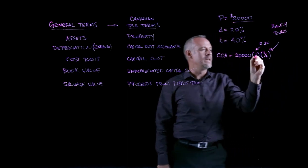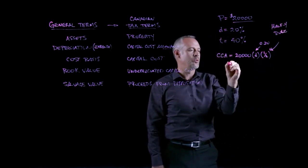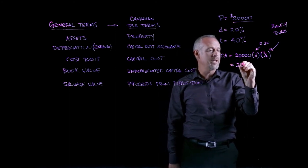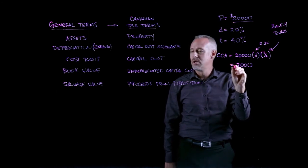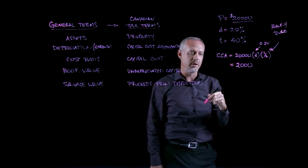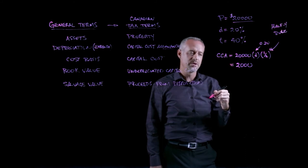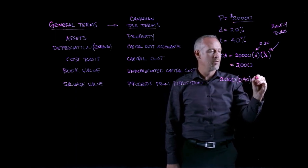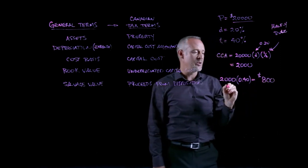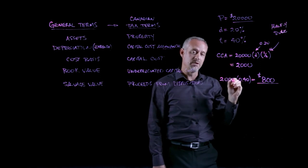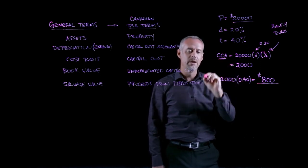So the half-year rule states that in the calendar year the purchase is made, we're only allowed to claim half the depreciation expense. Carrying out this calculation, we find that we're allowed to claim $2,000 as our capital cost allowance. The $2,000 reduces our taxable income. We then multiply the $2,000 by the tax rate of 40% and find that this company will save $800 in tax in the first year as a result of the capital cost allowance claimed as an expense.